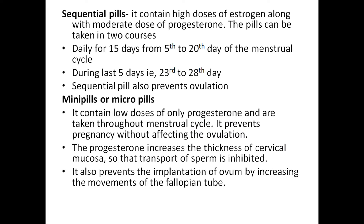Second type is the sequential pill, containing a high dose of estrogen along with a moderate dose of progestogen. The pills are taken in two daily courses from the 5th to 20th day of the menstrual cycle, and during the last 5 days also prevent ovulation. Mini pills or micro pills contain a low dose of progestogen and are taken throughout the menstrual cycle. They prevent pregnancy without affecting ovulation, by increasing the thickness of cervical mucosa to inhibit sperm transport, and also prevent implantation by increasing movements of the fallopian tube.